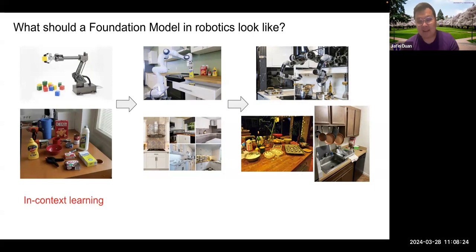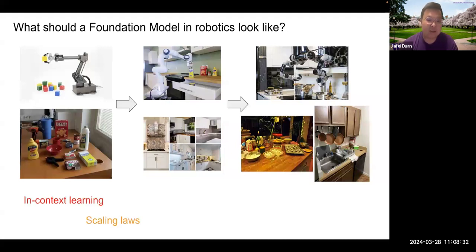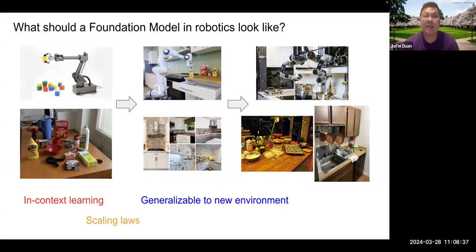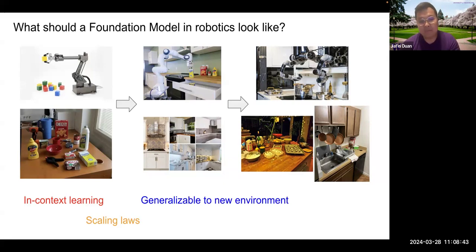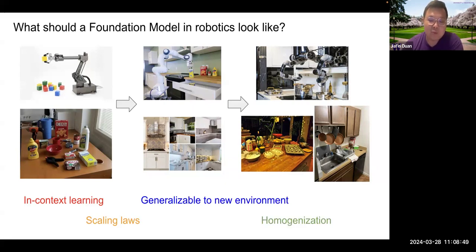A foundation model in robotics should have in-context learning, it should obey scaling laws like what we see in computer vision and NLP, and it should be able to generalize to new environments — not only adapted to the training distribution, but able to adapt to new variations like lighting, camera position, and everything else. And of course we want it to be generalizable. That's something really important for building such a foundation model in robotics.